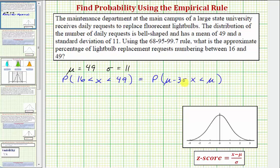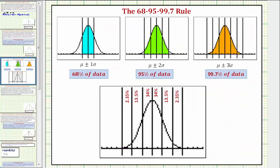Now that we have the percentage expressed in this way, we should be able to use the properties of the normal distribution, or the empirical rule, to determine this percentage. For a quick review: mu plus or minus 1 sigma represents approximately 68% of the data; mu plus or minus 2 sigma represents approximately 95% of the data; and mu plus or minus 3 sigma represents approximately 99.7% of the data. Because of the symmetry of the bell-shaped curve, we can also break the percentages down as shown below.